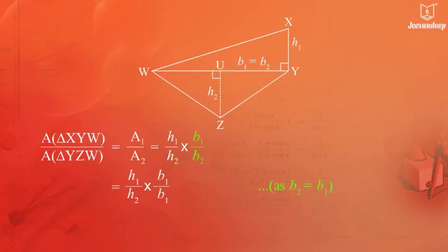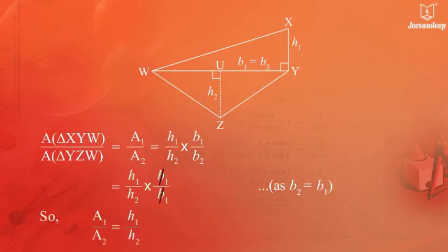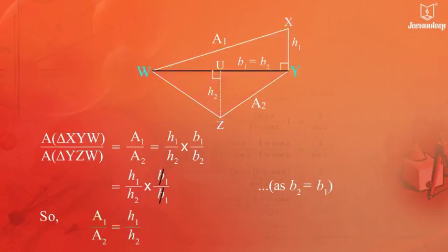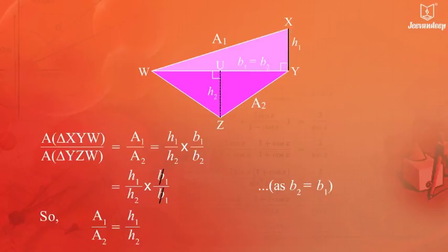Since B1 equals B2, B2 can be replaced by B1, so H1 upon H2 is multiplied by B1 upon B1, giving A1 upon A2 equals H1 upon H2. Thus, for triangles with a common or equal base, the ratio of areas of two triangles equals the ratio of their heights.